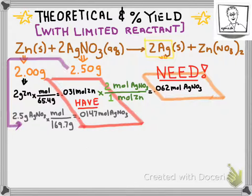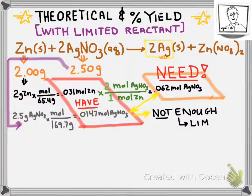You want to compare these two numbers, and as you look at this, you're going to see that you need more silver nitrate than you have, and therefore you don't have enough. And therefore, this would be called the limited reactant.